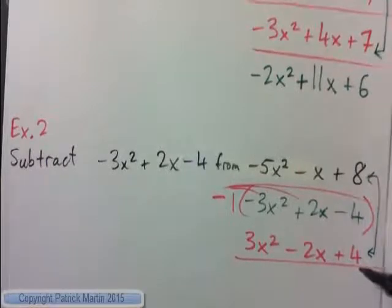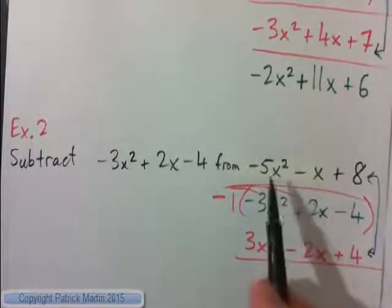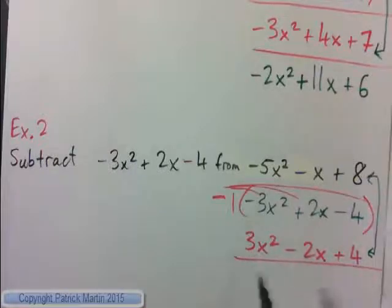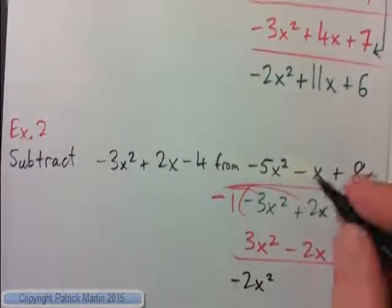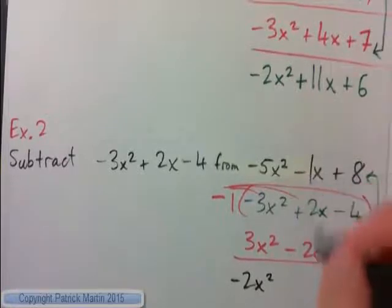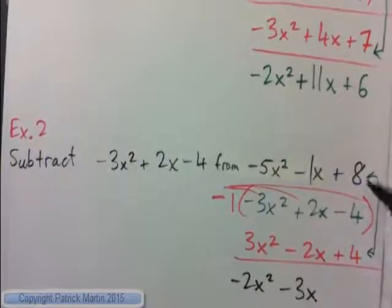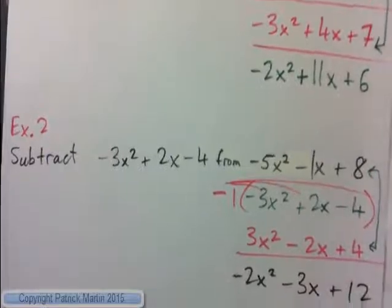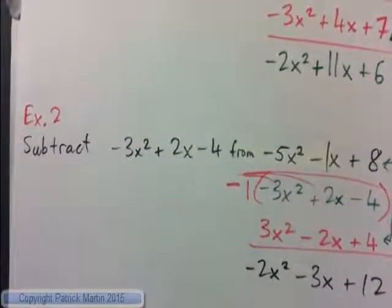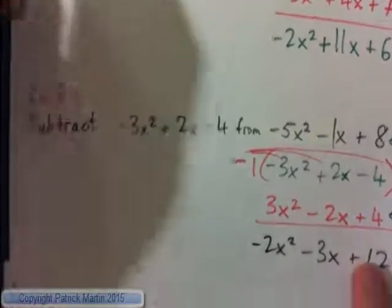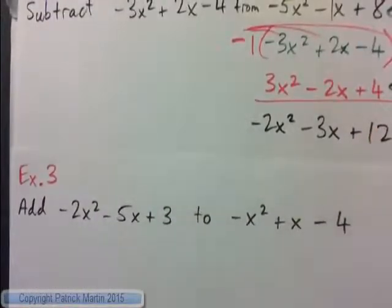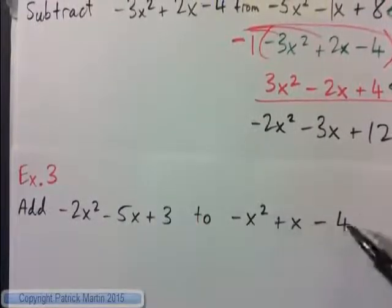Starting with the x squared terms: negative 5x squared plus 3x squared gives negative 2x squared. Then negative x and negative 2x combined give negative 3x. And 8 and 4 give 12. So the answer is negative 2x squared minus 3x plus 12. Example 3 — you can probably do this yourself. Press pause and do this one: add negative 2x squared minus 5x plus 3 to negative x squared plus x minus 4.